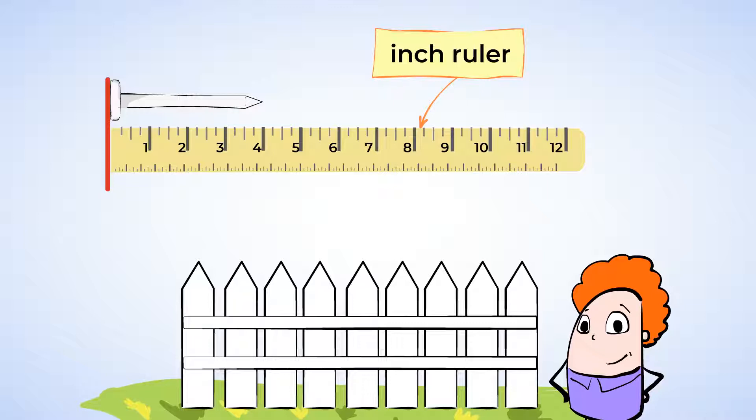So that means you need to line up the nail with the very edge of the ruler. See how one end of the nail is perfectly aligned with the edge of the ruler? That means you'll get an accurate measurement. Now, see where the nail ends on the ruler? It ends at the number 4, and this means that the nail is 4 inches long. Nice work.